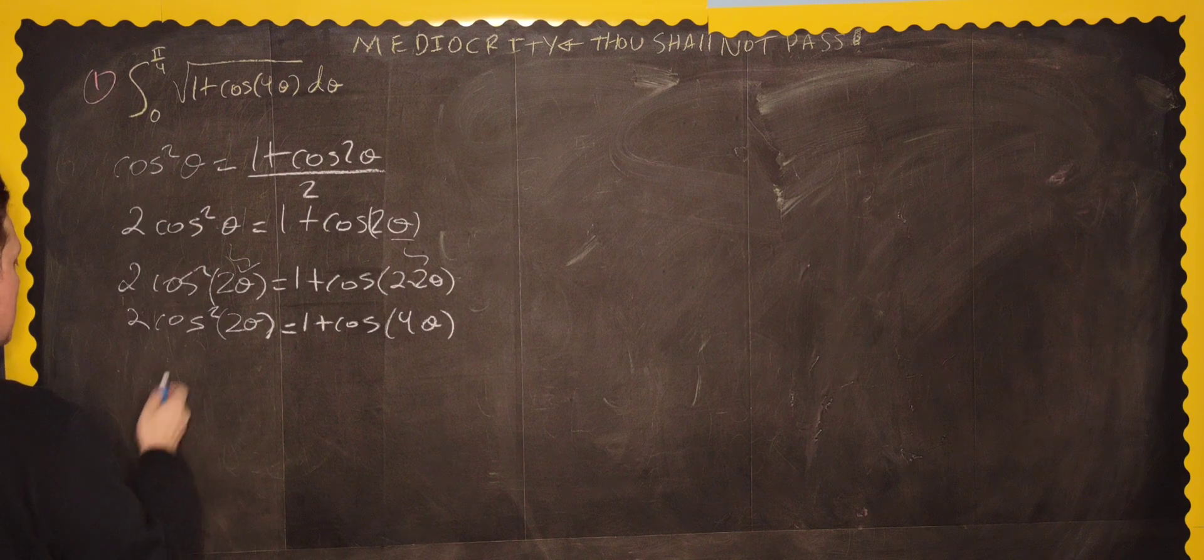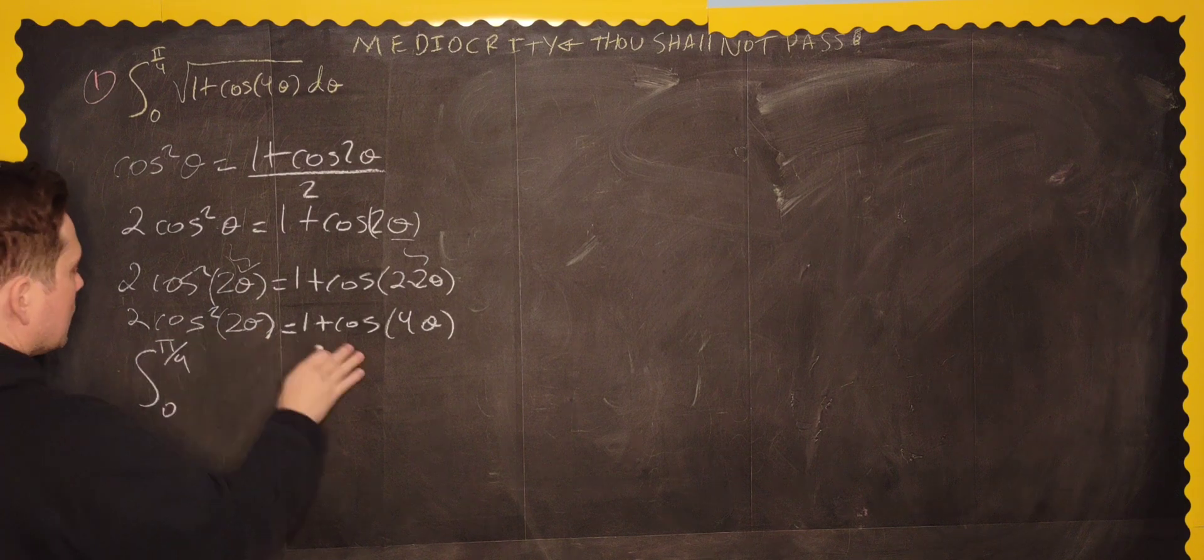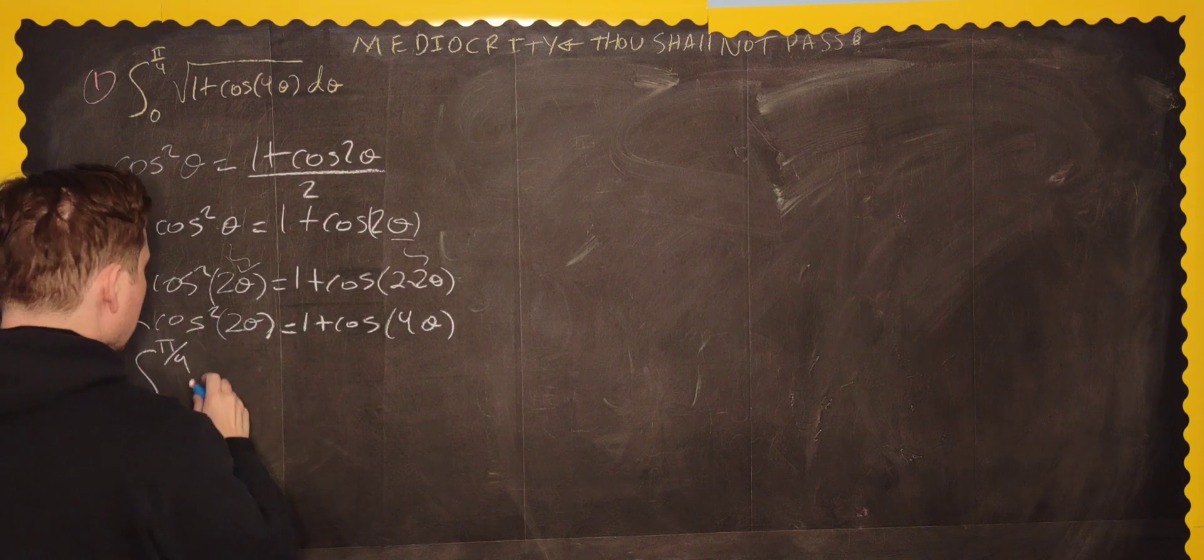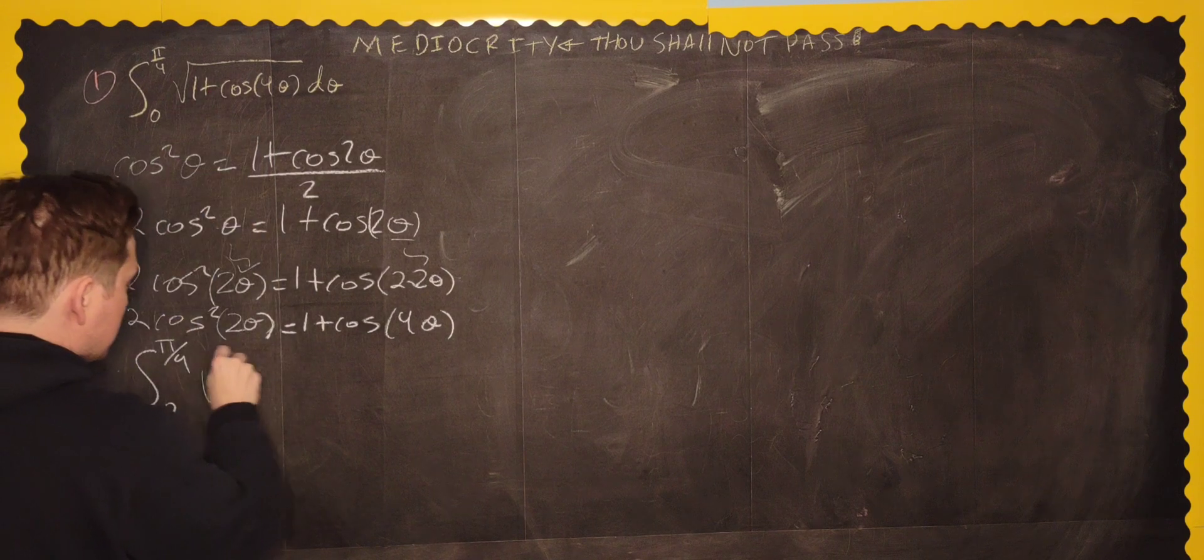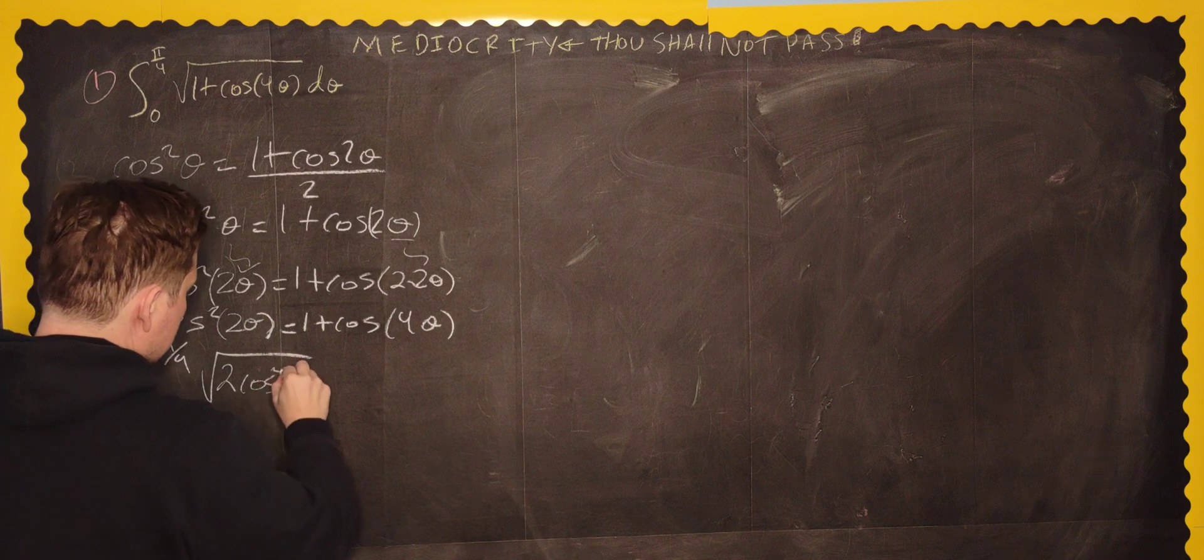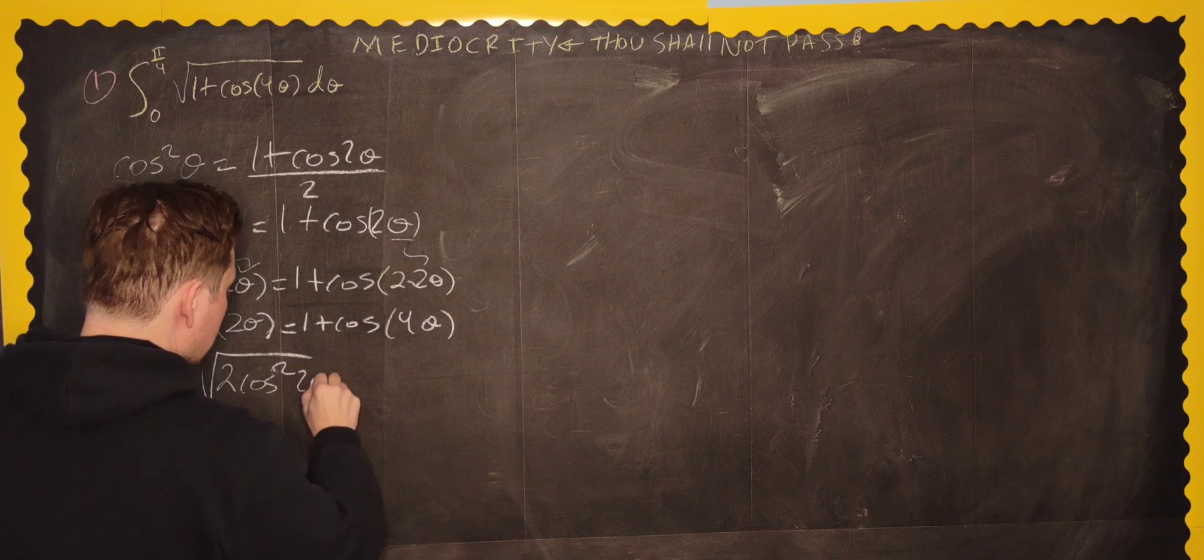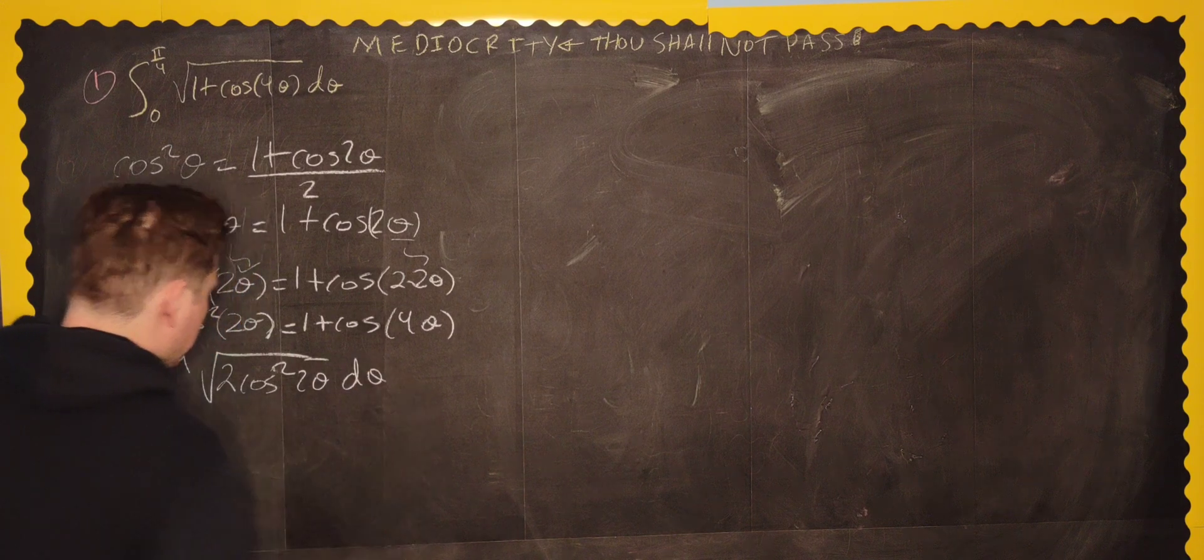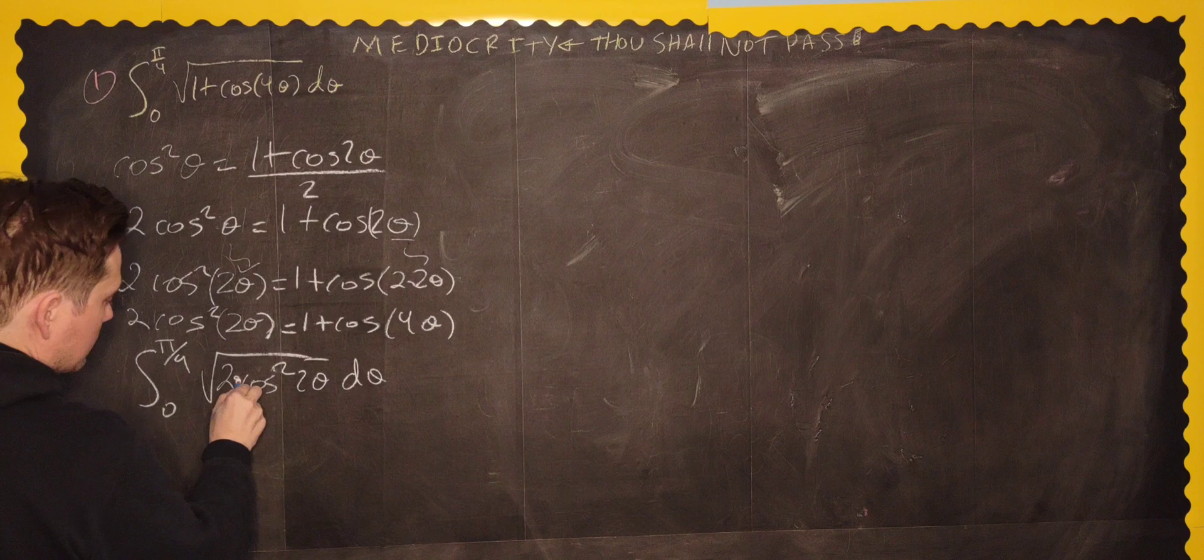So now, this is good because we have 1 plus cosine of 4 theta. Now we have it here and it's interchangeable with this. So our integral can be now recreated as follows. The integral from 0 to pi over 4. And now this, instead of having this, put this expression. So it becomes the root of 2 cosine squared. That says 2 up here. 2 and then 2 theta and then d theta right here.